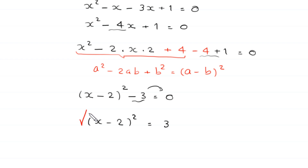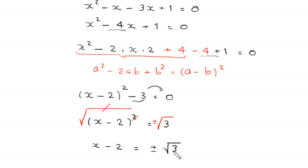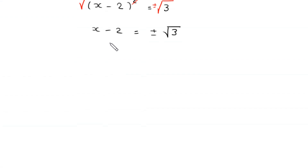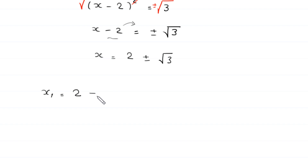Taking the square root of both sides, the square cancels with the square root, giving x − 2 = ±√3. Moving −2 to the right-hand side, we get x = 2 ± √3. This means x₁ = 2 + √3 and x₂ = 2 − √3. These are the two solutions of the equation.